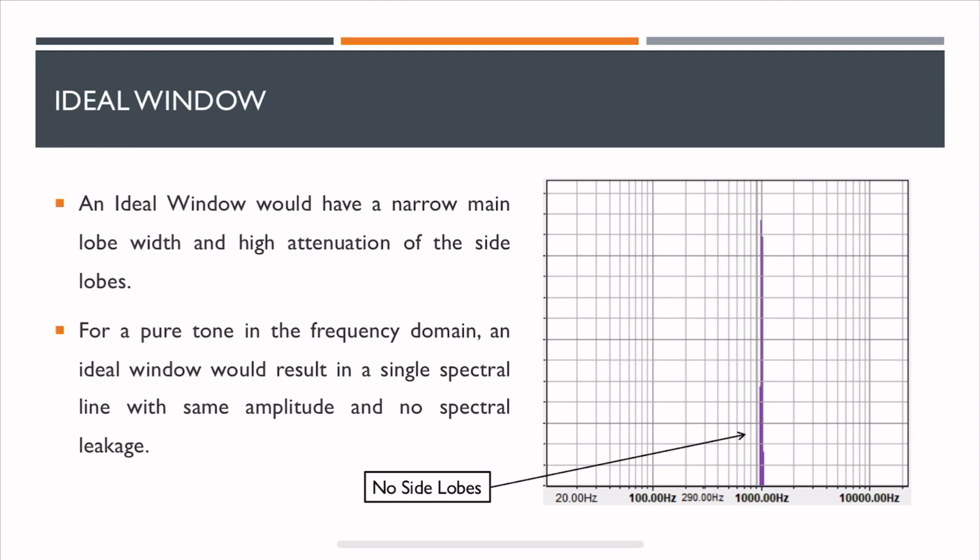If there is no spectral leakage, which means the actual spectra that you see is reflecting what the signal is actually made up of. If you're going to have spectral leakage, it'll give misleading information about the signal.